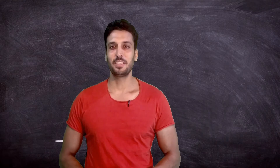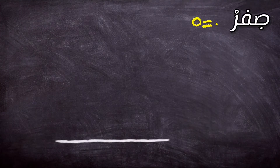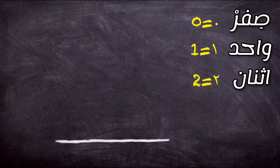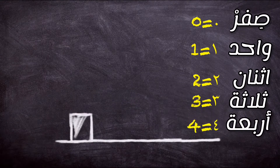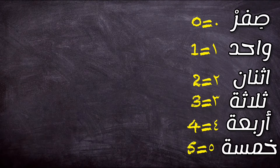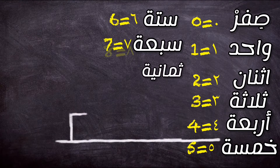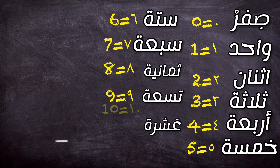These numbers from 0 to 10 — let's repeat them again, and please repeat after me. Zero is like a tiny dot as you see it. 1, 2, 3, 4, 5, 6, 7, 8, 9, 10.